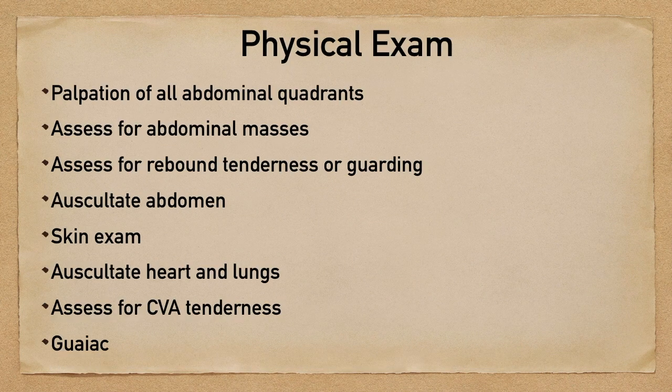Once you've obtained that history, you'll want to perform a thorough physical examination. Some considerations include palpating all the quadrants of the abdomen, checking for things like guarding, rebound tenderness, or masses. Don't forget to check the overlying skin as well — you'll want to check for signs of trauma, bruising, and rashes. Maybe they have early shingles or herpes zoster that's leading to their abdominal pain. You could also auscultate the abdomen and listen for bowel sounds.